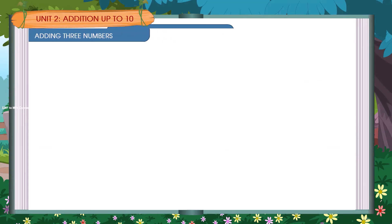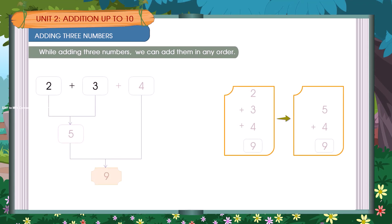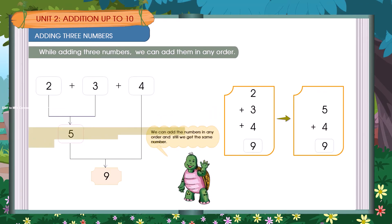Adding 3 numbers. While adding 3 numbers, we can add them in any order. 2 plus 3 is equal to 5. 5 plus 4 is equal to 9. We can add the numbers in any order and still get the same number.